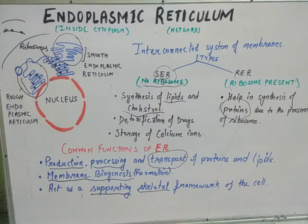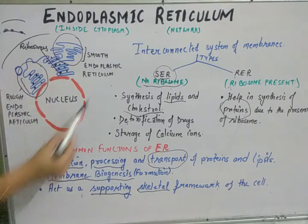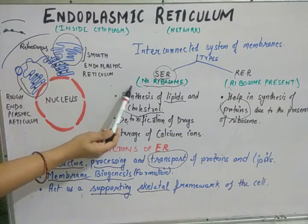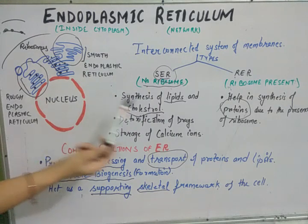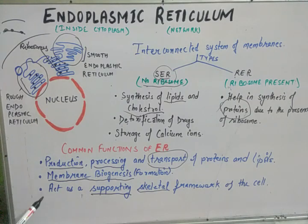To recap: endoplasmic reticulum is a network of tube-like structures present inside the cytoplasm — that is why it is called endoplasmic reticulum. Based on the presence of ribosomes it is of two types: smooth, mainly responsible for synthesis of lipids and fat molecules, and rough, responsible for synthesis of protein molecules, which are then transported within the cell. Many more functions exist, but these cover the essential points.